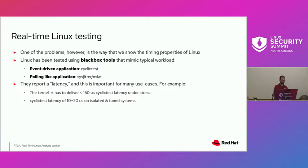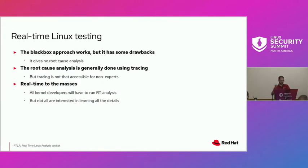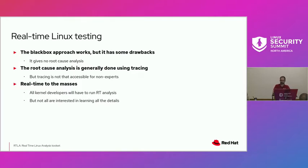One of the problems we have nowadays is that the timing properties of Linux are analyzed using a black-box approach, which is sometimes not convincing when you need to run things like safety-critical systems. For example, we have cyclic test and OSSTAT that try to mimic some typical workloads and report a latency. The black-box approach works — PreemptRT was developed using it — but it has some drawbacks: it doesn't give a root cause analysis of the problem. Tracing is available for root cause analysis, but it's not accessible to non-experts.